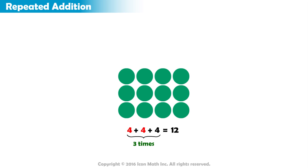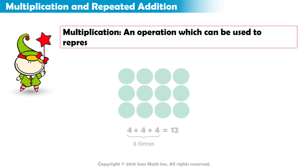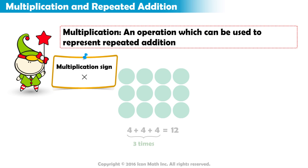Instead of adding a number to itself many times, we can use a direct and short way called Multiplication. Multiplication is an operation which can be used to represent repeated addition. When we multiply, we use this as a multiplication sign.